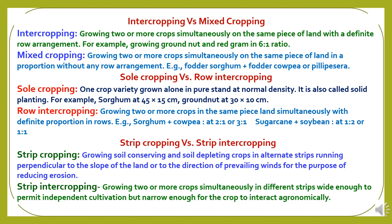Strip cropping refers to growing soil-conserving and soil-depleting crops in alternate strips running perpendicular to the slope of the land or to the direction of prevailing winds, for the purpose of reducing erosion. Strip intercropping, in contrast, involves growing two or more crops simultaneously in different strips wide enough to permit independent cultivation but narrow enough for the crops to interact agronomically.